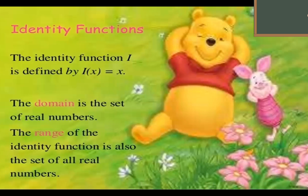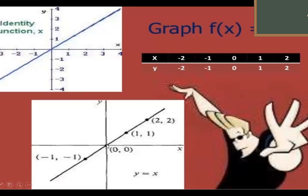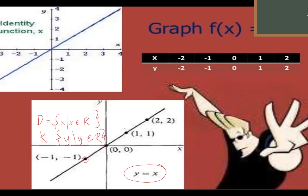Next is identity function. The identity function means y is equal to x. Whatever the value of x, the value of y returns the same. So f(x) or i(x) is equal to x. The domain is the set of real numbers, and the range of the identity function is also the set of real numbers. For example, passing through (0,0): if your x is 0, y is 0; if x is 1, y is 1; if x is 2, y is 2. The graph passes through the origin. Domain: set of all x such that x is an element of the real numbers. Range: set of y such that y is an element of the real numbers.